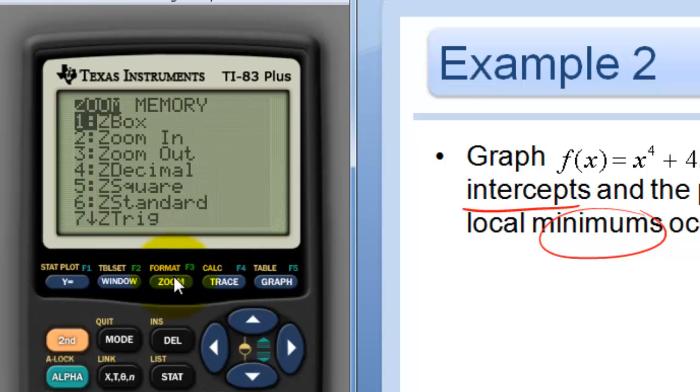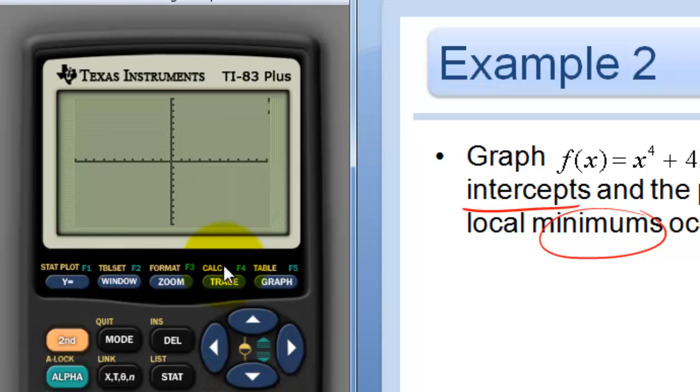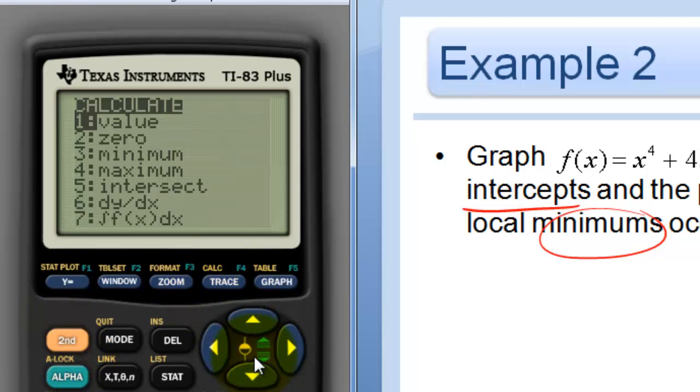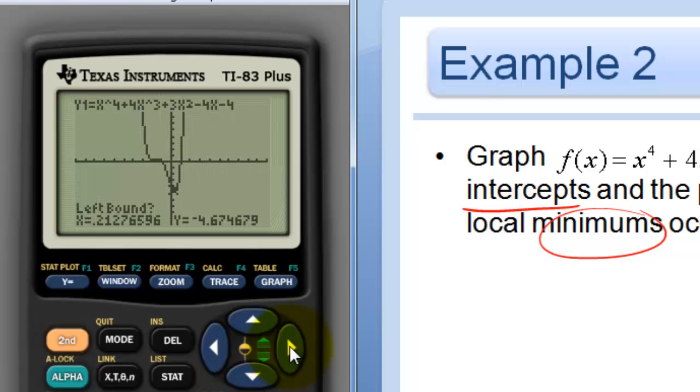And then I'm going to have to go back to my standard zoom six window in order to get this other minimum. So sometimes you need to play with your window, like I have to do in this problem. So go to second calc and then go down to minimum. And again, go as close to your point as possible and press the left arrow. I'm pressing it twice here. Again, I just want to make sure I'm to the left, right of the point. And then guess is just smack in the middle.